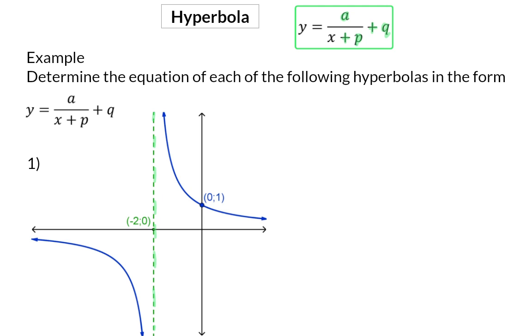In the sketch, there's one asymptote given that cuts the x-axis at minus 2, so it has the equation x is equal to minus 2. And this means that the p value is 2.